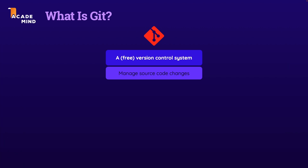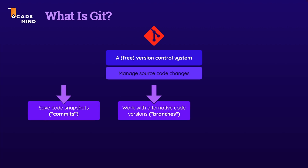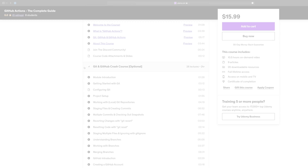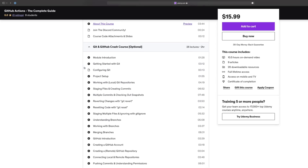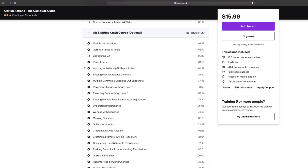In order to take this course, no prior GitHub Actions knowledge is required. You don't even need a deep knowledge about Git and GitHub, since this course also comes with a Git and GitHub refresher course section, which is optional to take, but which will give you that solid Git and GitHub foundation you need in order to understand GitHub Actions. So it's all included in the course — we start with the basics and then gradually dive deeper into GitHub Actions.